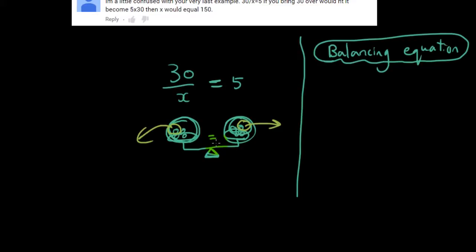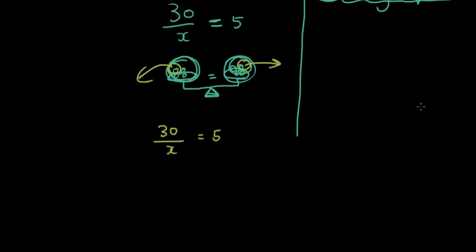So basically I'm trying to illustrate that we have 30 divided by x equals 5. Whatever you do you're going to do it to both sides. So what I'm going to do is I'm going to multiply both sides by x. I'm going to copy both sides down first. And then I'm going to multiply both sides by x. Remember you can do whatever you want as long as you do it to both sides.